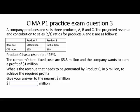We've got a company that produces and sells three products: A, B, and C. The projected revenue and contribution-to-sales ratios are given. Product A: projected revenue 10 million, CS ratio 15%. Product B: 20 million, CS ratio 10%. Product C has a CS ratio of 25% but we're not given the revenue. The company's total fixed costs are 5.5 million and they want to earn a profit of 1 million.